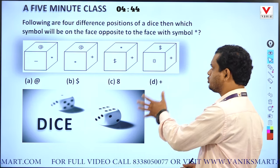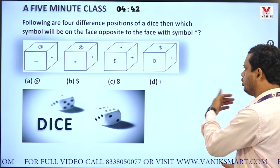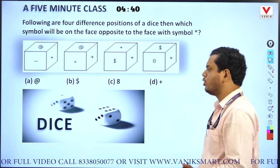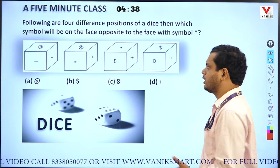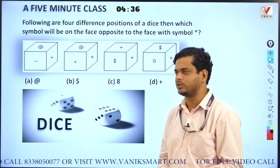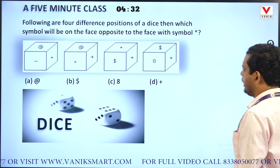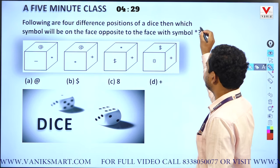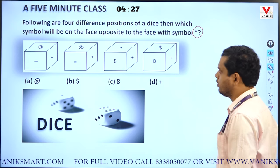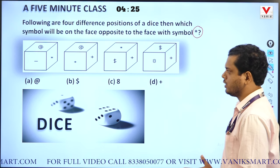Within a very short span of time friends, I am going to make you aware about some tricks which are very effective for any kind of SSC type exams. Here a dice is given, and you have to identify the opposite of the symbol star. So how many approaches are there?